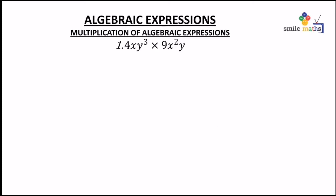Hi guys, welcome to this video, still on the topic of algebraic expressions. Now we are looking at multiplication of algebraic expressions. For the basic part, we have an example like 4xy³ times 9x²y. What we do here is whole numbers multiply whole numbers, then we do indices for the variables — if they are multiplying, we add their exponents. So we have 4 times 9, then x to the power 1 plus 2, times y to the power 3 plus 1. The answer becomes 36x³y⁴.